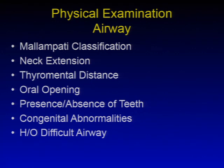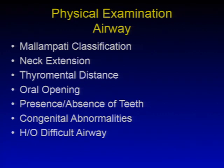We'll get started with the physical examination of the airway — definitely one of the most critical aspects of an anesthesiologist's exam. The Mallampati classification is well known and is evaluated for every patient. Neck extension is important, especially in patients who may have had neck pathology or spinal fusion surgery. The thyromental distance, oral opening — large incisors have been found to correlate negatively with ease of laryngoscopy. The presence or absence of teeth also matters; an edentulous patient may be easier to intubate. Congenital abnormalities such as micrognathia and a history of difficult airway should also be considered.